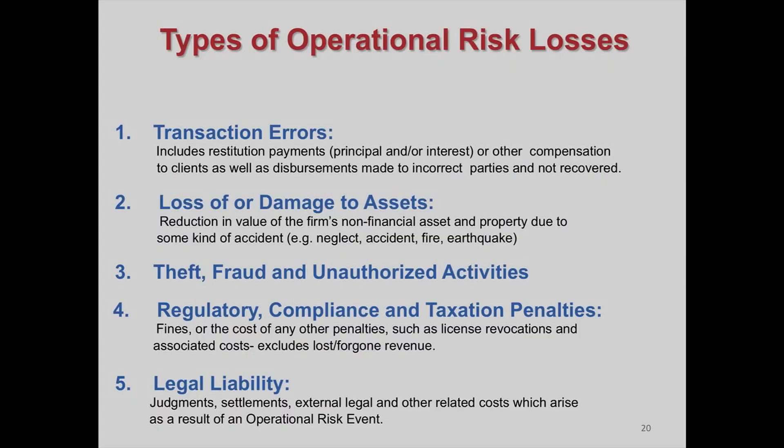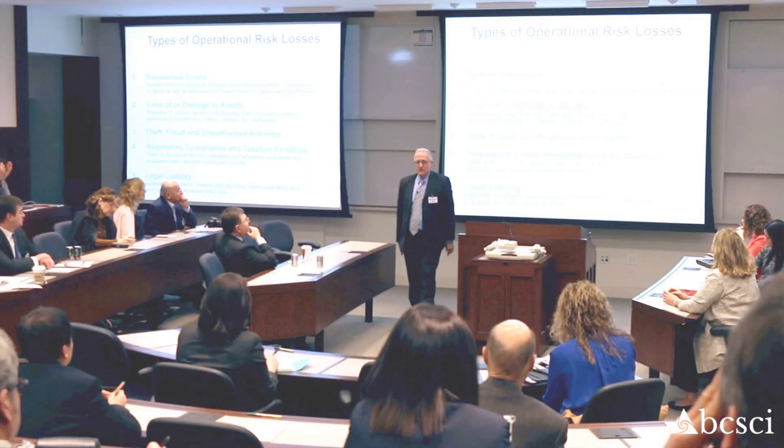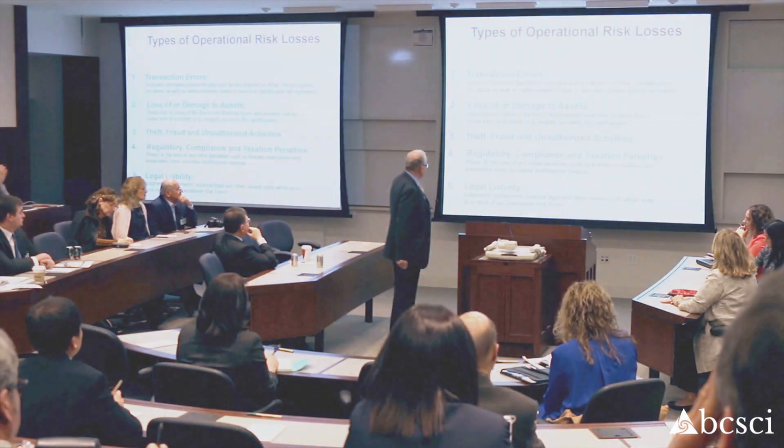The types of operational risk losses include: transaction errors, loss or damage to assets, theft, fraud, and unauthorized activities. There are also regulatory compliance and taxation penalties — do not underestimate this. Legal liability as well. For example, which bank had to pay $250 million two months ago as a penalty to New York State for not complying with anti-money laundering? It was the Agricultural Bank of China, which has a big office in New York. The New York regulators really came down on them.